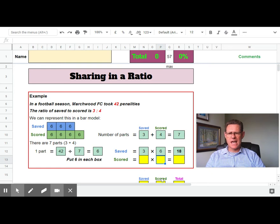So that gives 18 goals that were saved. For scored, there are four parts, again each part is six, which means there are 24 goals that have been scored. And that's the method.